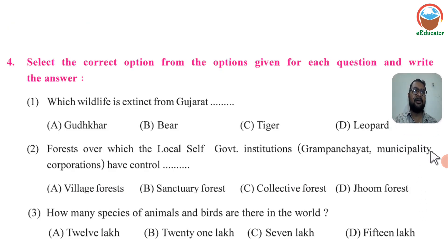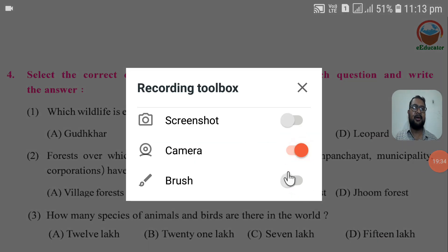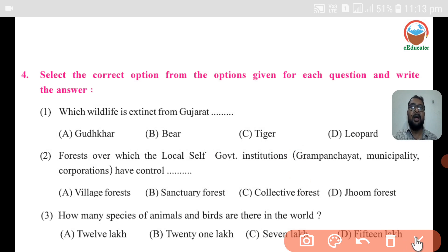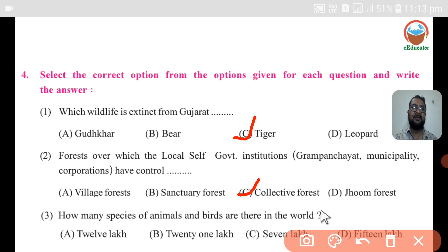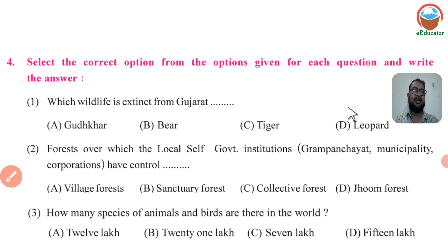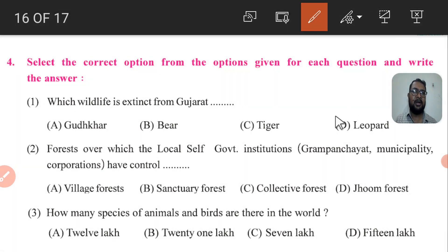Now look at the MCQs — we need to identify the correct answers. Which wildlife is extinct from Gujarat? The answer is Tiger. The forest over which local self-governing institutions have control is called Community Forest. How many species of animals exist in India? The correct answer is 15 lakh. These are the correct answers for the MCQs.